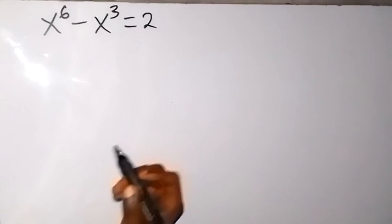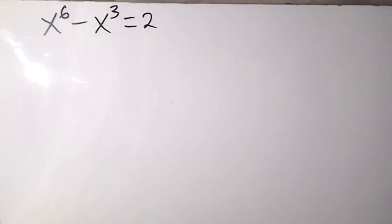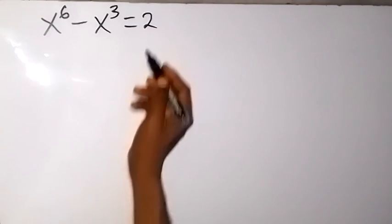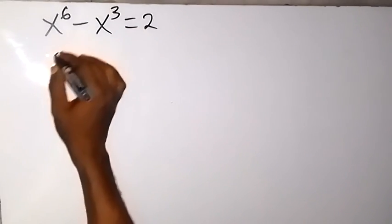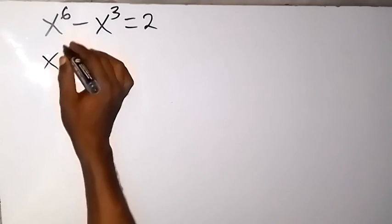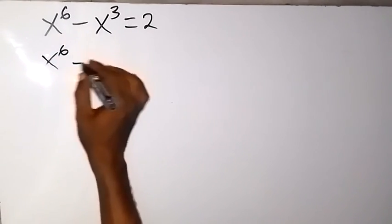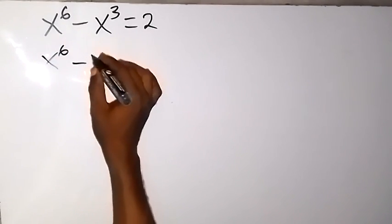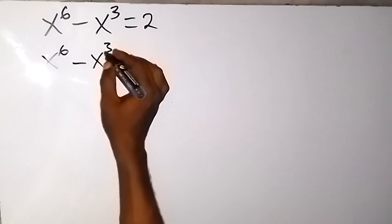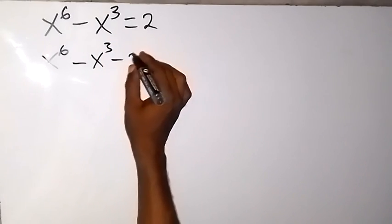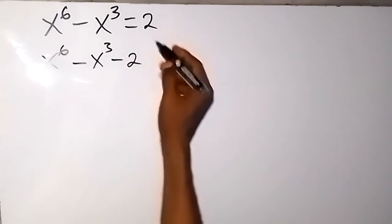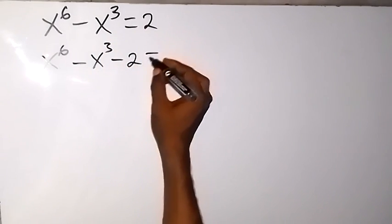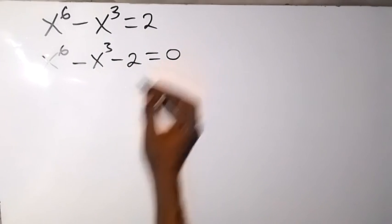Now, let's start by taking 2 from this side to this side. So we have x raised to power 6, minus x raised to power 3, then minus 2 — plus becomes minus — then equals to 0 left here.